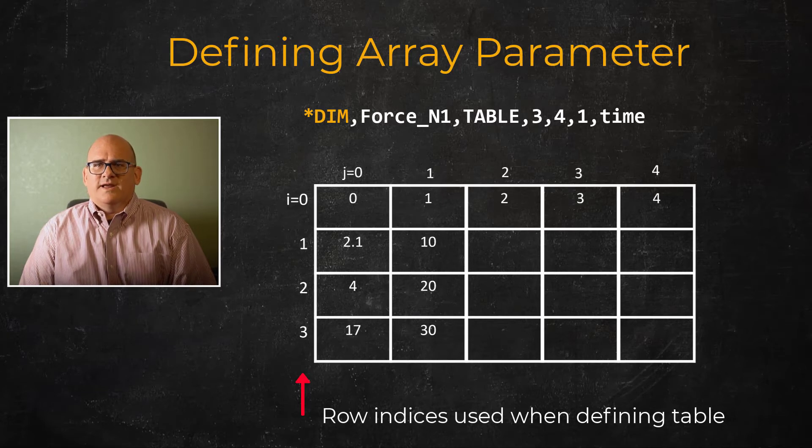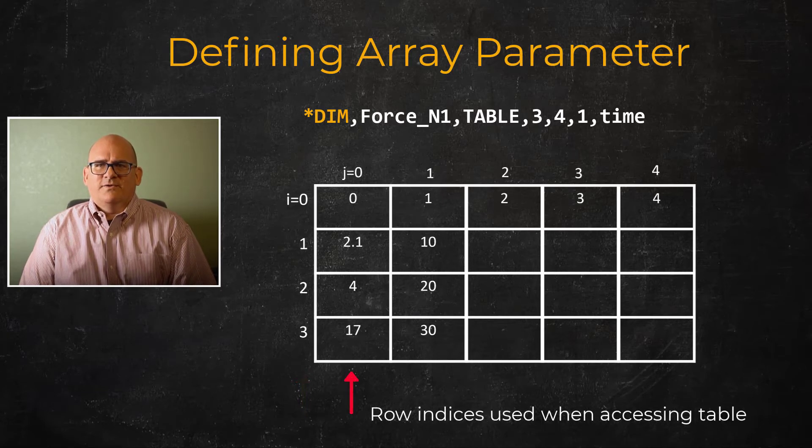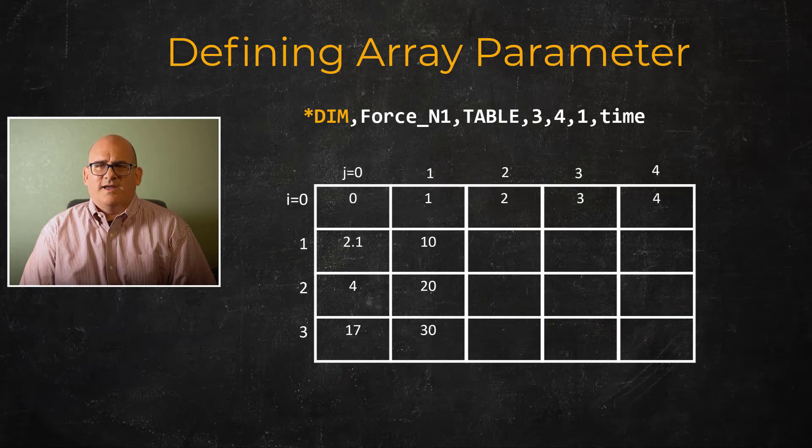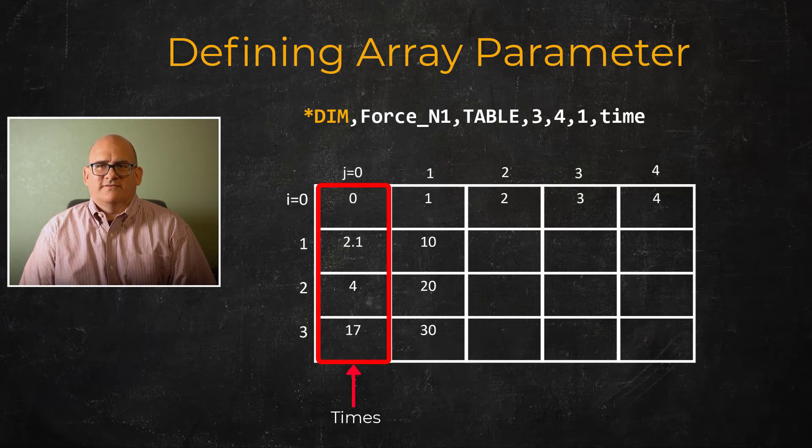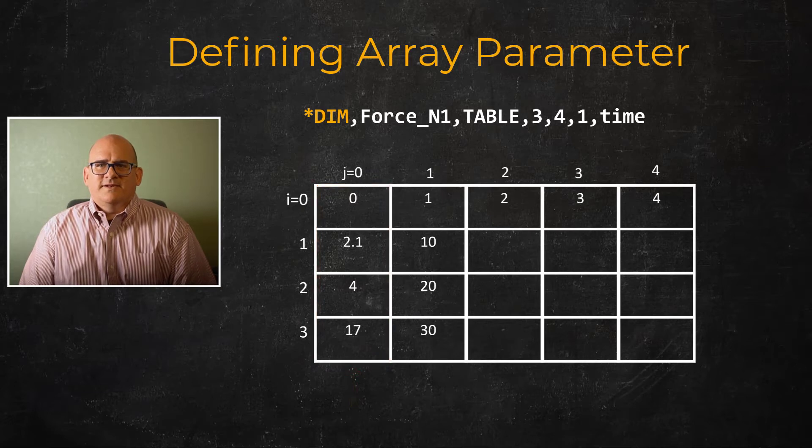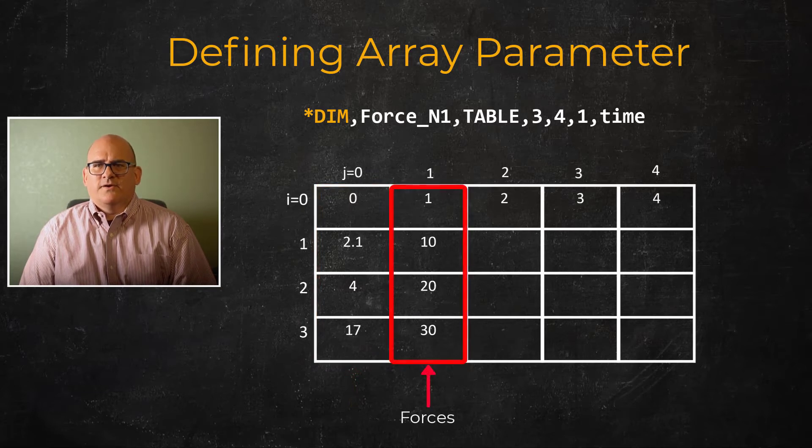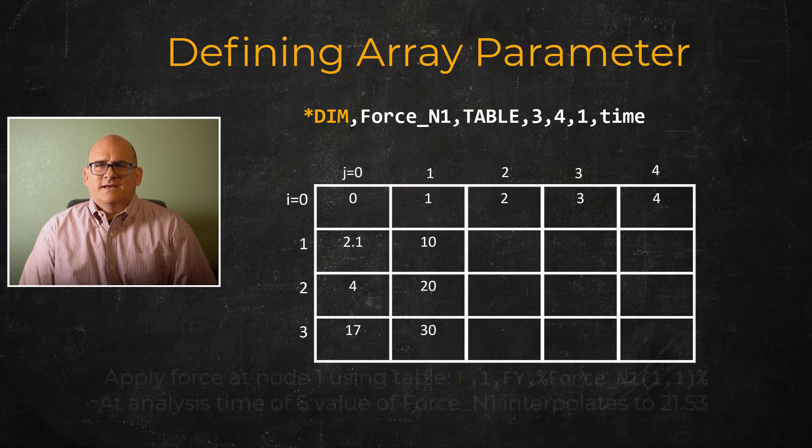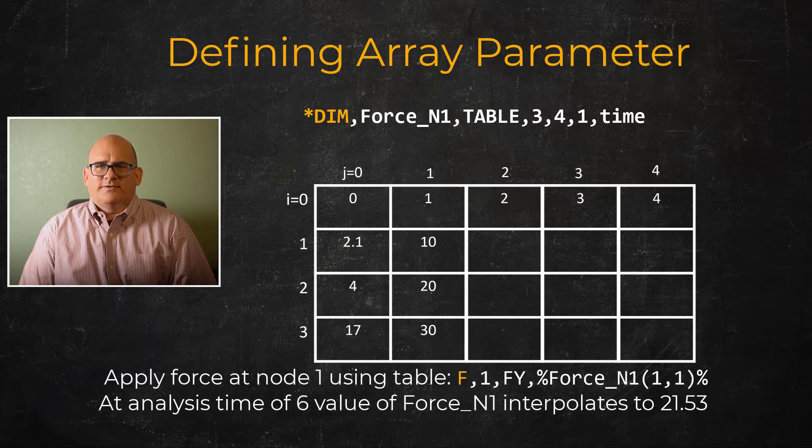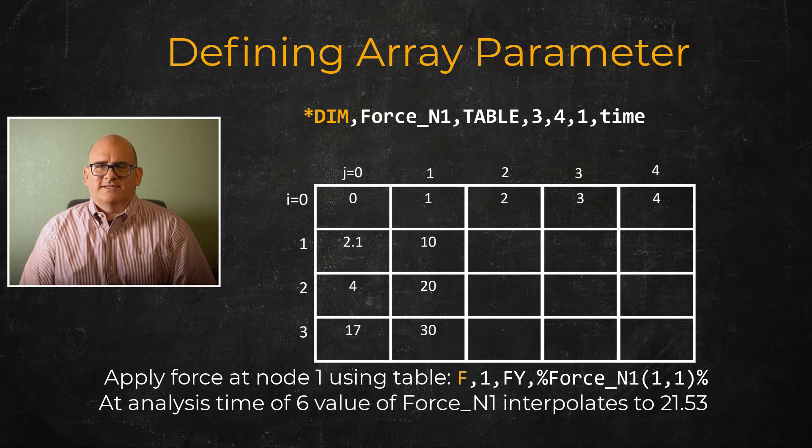As an example, we can define a table. Let's say the rows define time. The first, second, and third row indices of the zero column could be defined to say 2.1, 4, and 17. The same indices of the first column could be a node applied force value. In the table used in place of a specific force value in the F command, when solving at say time 6, then the applied value is interpolated between the values given at the table time entries of 4 and 17.